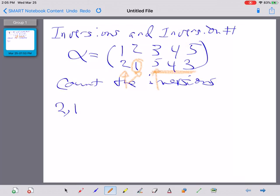And 5 is bigger than both 4 and 3. And so 5, 4, and 5, 3 are inversions.